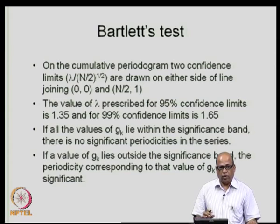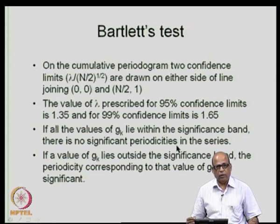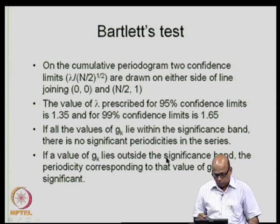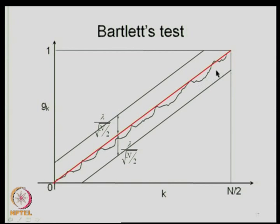If a particular g_k value lies outside the significance band, the periodicity corresponding to that k value is significant and the series does not pass the test. In most acceptable models, the residual series lies well within the bands. For curiosity, you can also draw the cumulative periodogram for the original data — you will see several periodicities lying way above or below the band, indicating they are significant.